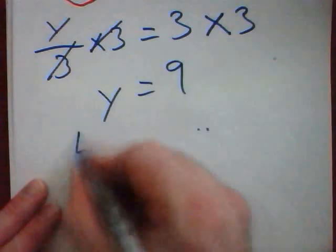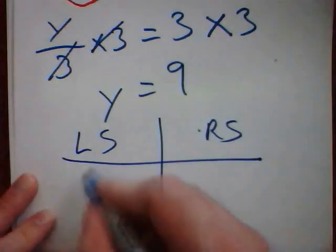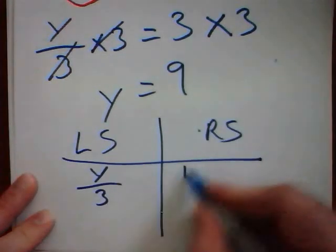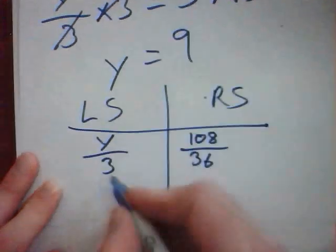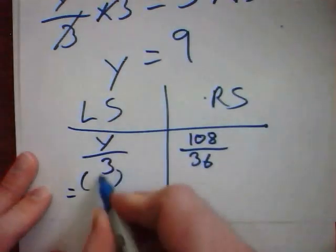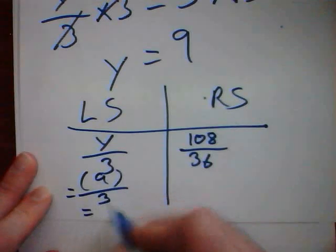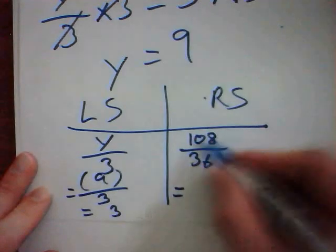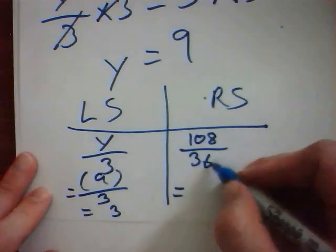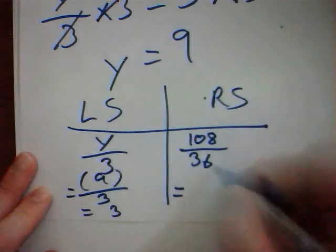Left side, right side. I think that y is 9, so I will put 9 in its place. 9 divided by 3 is 3. I'm going to take a moment to double check to see if 108 divided by 36 will work. That will be 3.